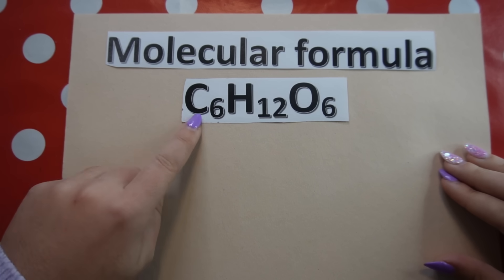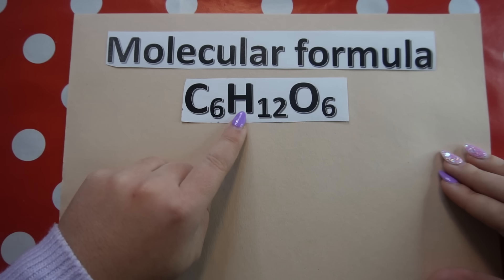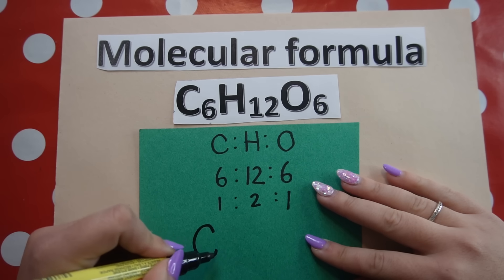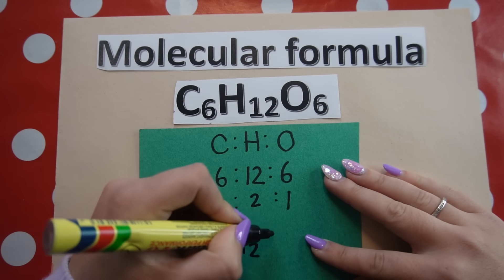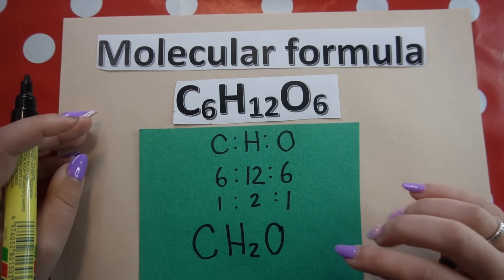Molecular versus empirical formula — what's the difference and how do we calculate each? A molecular formula gives the type and number of atoms present in a molecule or compound. An empirical formula is the simplest version: the simplest whole number ratio of atoms within a compound.